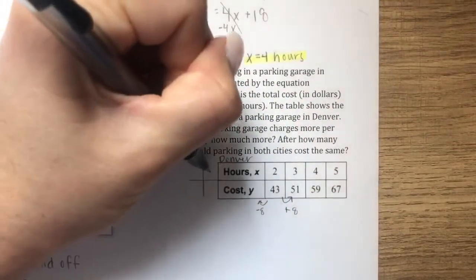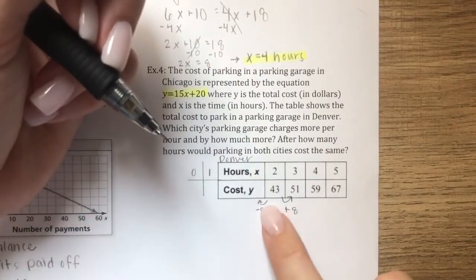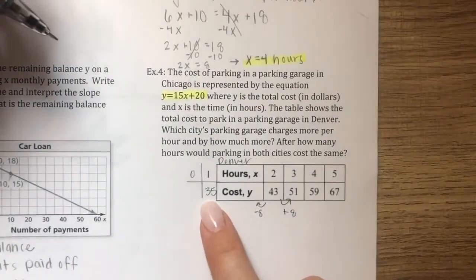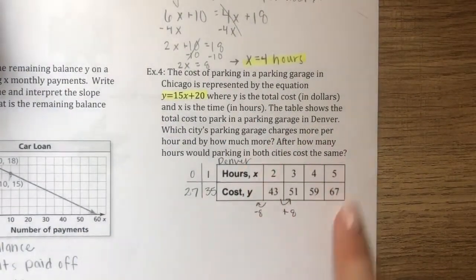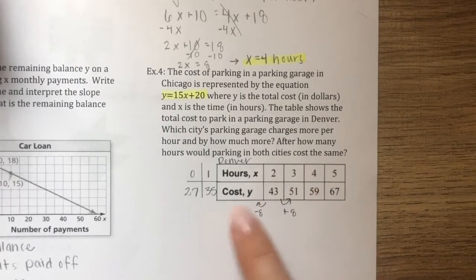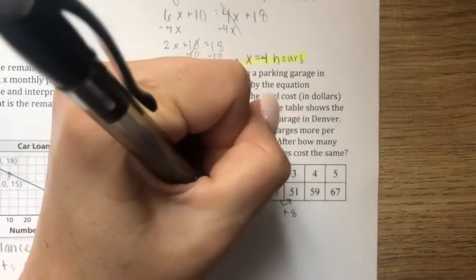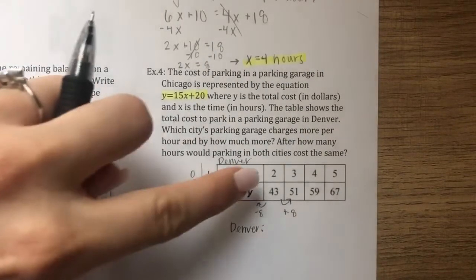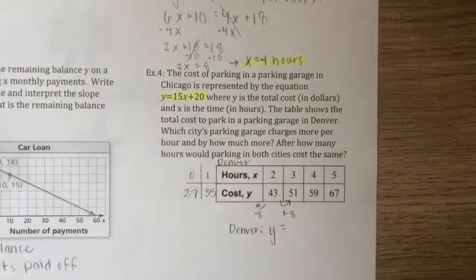Counting back to x equals one and x equals zero: starting from 43, subtract 8 to get 35 at x equals 1, then subtract 8 again to get 27 at x equals 0. That gives our y-intercept of 27. With a slope of 8 and y-intercept of 27, Denver's equation is y equals 8x plus 27.